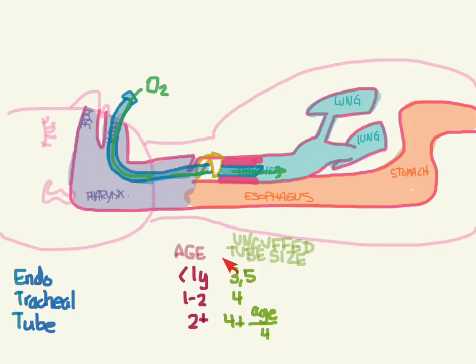If you don't have one, follow this rule: for less than one year use 3.5, for one to two use size 4, for greater than two use 4 plus the age divided by 4. If using a cuffed tube, subtract 0.5 from all of these. So instead of 3.5 use 3, instead of 4 use 3.5, and instead of 4 plus age over 4, use 3.5 plus age over 4.